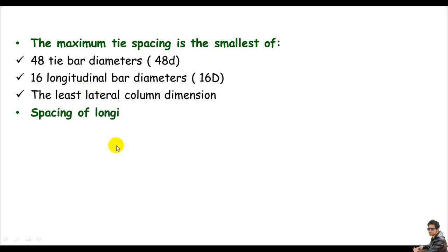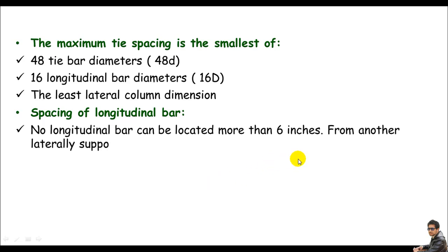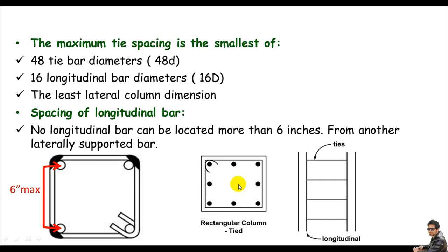The next requirement is the spacing of main bars. According to ACI 318, no main bar can be located more than 6 inches from another bar — meaning the maximum spacing between main bars is 6 inches. The distance between any two adjacent bars must be kept less than or equal to 6 inches.